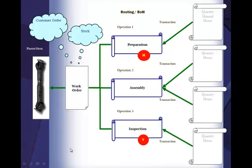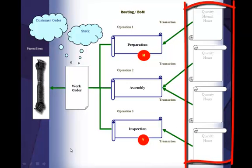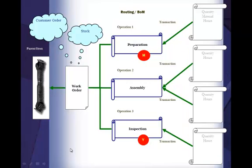In previous versions, the Elliott Bill of Material Production WorkOrder only supported tracking of materials. In version 7.5, Elliott introduced WorkOrder Plus, which not only tracks materials, but also tracks labor and routing.